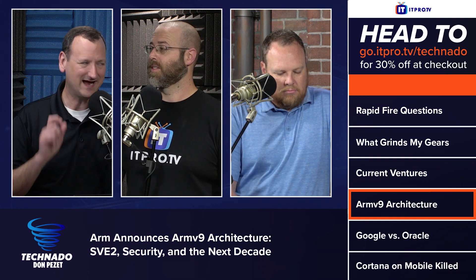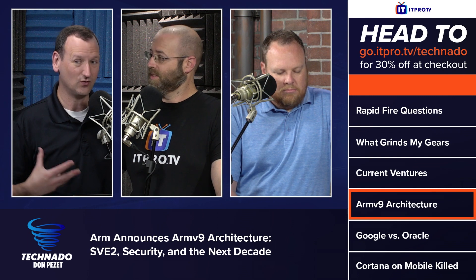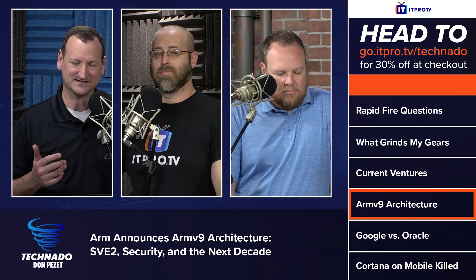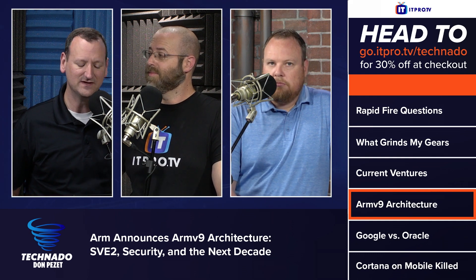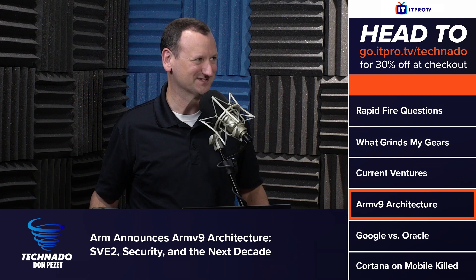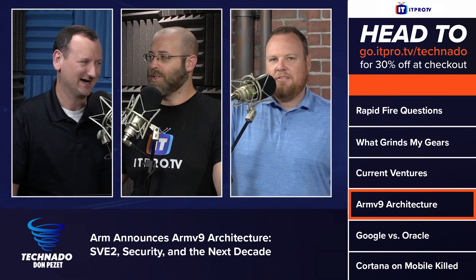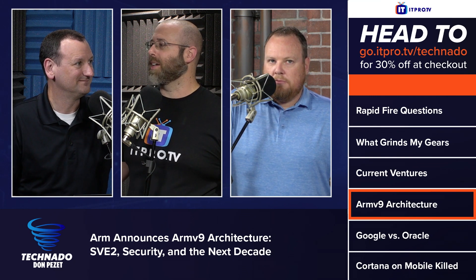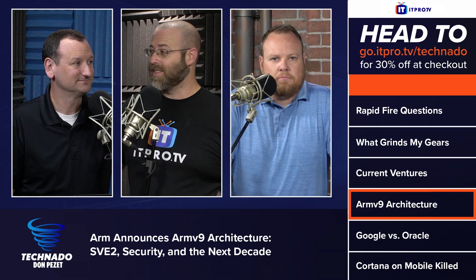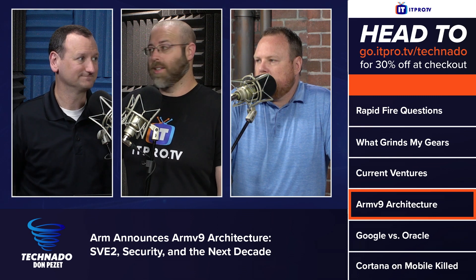I'll throw this out there: Nvidia has been working to acquire ARM, and that's still under monopoly review. I suspect they're really holding out for ARM v10 — I bet they have some big stuff sitting on the shelf and we'll see a bigger increase there. This might be a stopgap measure. You can't wait too long or you lose market relevance, so you put something out with a few neat features and a performance bump, while the real big thing is coming in maybe five years.